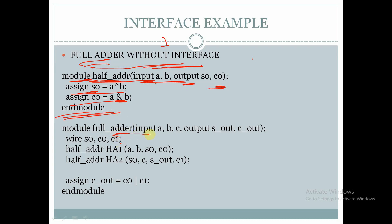Here in full adder we are taking the signals a, b, c as input, s_out and c_out as output signals. Here we are declaring s0, c0 and c1 as wire type and we are instantiating half_adder as ha1 and we are passing the arguments as a, b, s0 and c0.